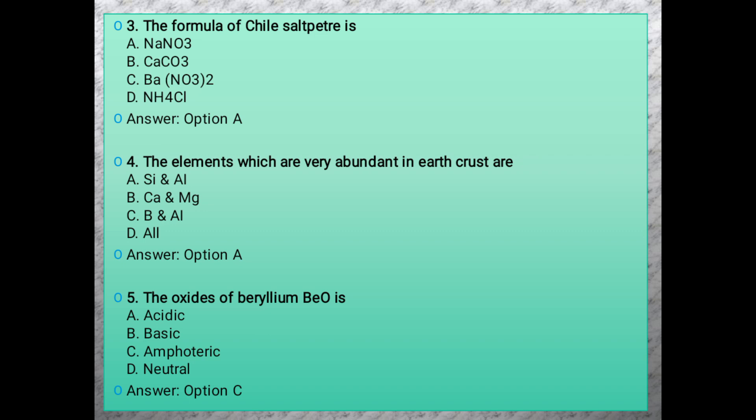Question 5: The oxides of beryllium are amphoteric because beryllium has dual properties - both acidic and basic.